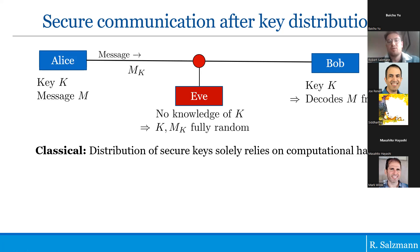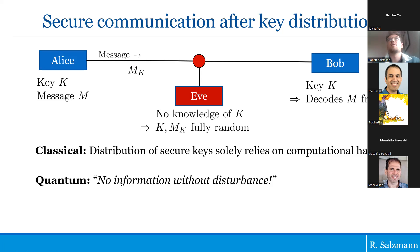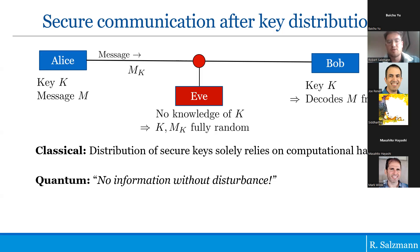In the quantum world, if you have some quantum communication before the message communication step, and Eve has access to the quantum channel Alice and Bob are using, she would disturb the quantum message when she measures it, and Alice and Bob have means to find out someone was there. Because of this quantum principle — no information without disturbance — we can actually prove information-theoretic security results.